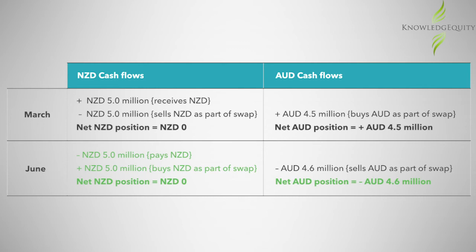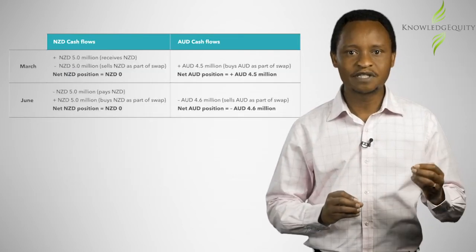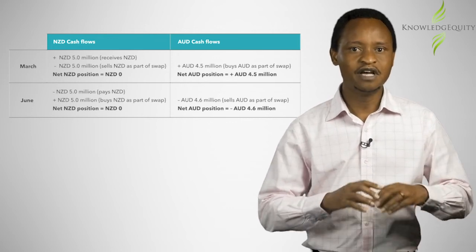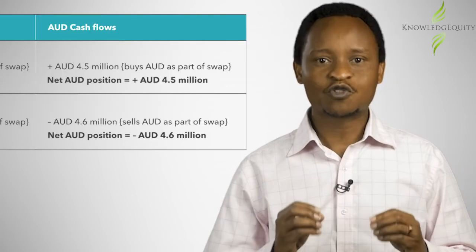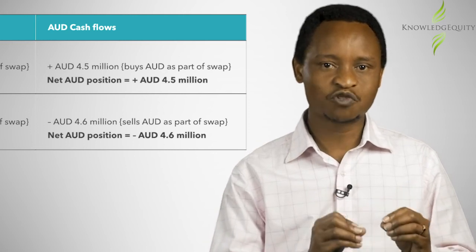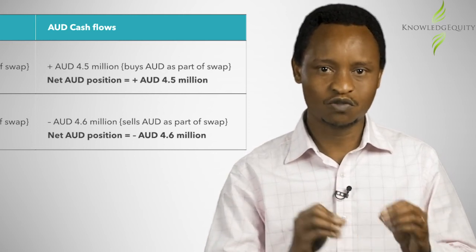These cash flows show that the swap results in netting off the New Zealand dollar flows to zero in both March and June, removing the timing mismatch. The Australian dollar differential is largely offset by the receipt of interest from investing the Australian dollar proceeds during the June quarter. To recap, FX swaps can be used to eliminate timing mismatches by buying one currency in the spot market and selling the same currency at a date in the future. They enable the cash flows and currencies to be shifted to a specified period in order to eliminate the foreign exchange exposures.